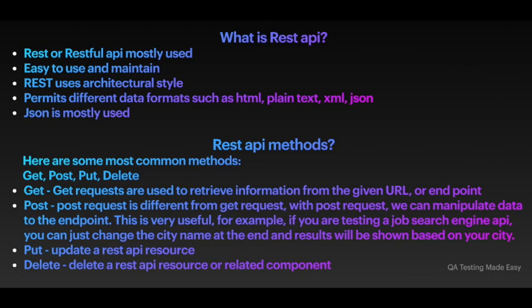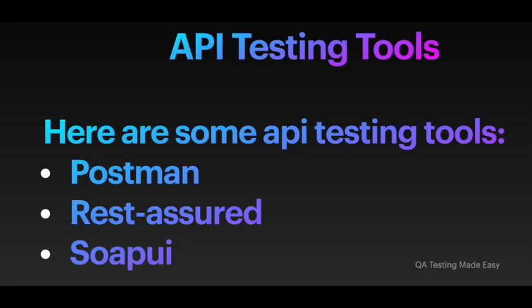REST, or RESTful API, has kind of taken over the market. It's much easier to use and maintain. REST uses an architectural style and permits different data formats such as HTML, plain text, XML, and JSON — but JSON is mostly used. REST API methods are similar to SQL. The most common methods are GET, POST, PUT, and DELETE. GET retrieves data — for example, if you're testing a job search API you can change the city name and results will be shown for that city. PUT updates a resource, and DELETE removes one.